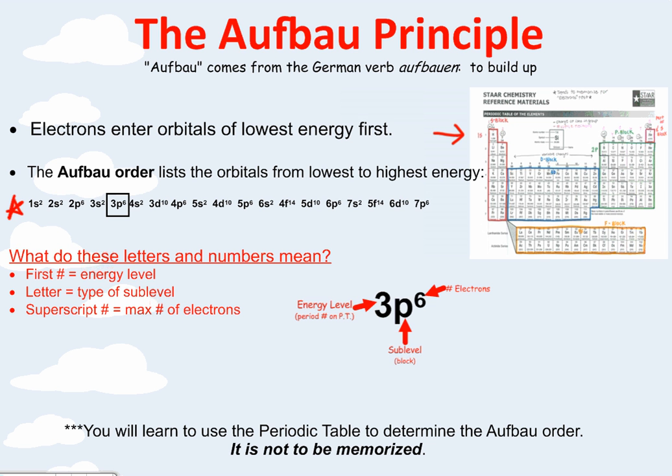So it says, what do these letters and numbers mean? When you see 1s² or 3p⁶, what does that mean? Well, this first number right here, this is the energy level. Remember, that's the period on the periodic table. The p, that's the sublevel or the block it's in. And the exponent or superscript is the number of electrons fitting in that orbital or sublevel rather.